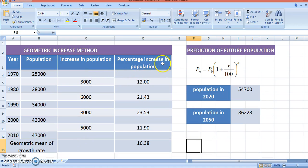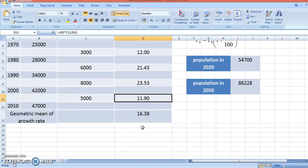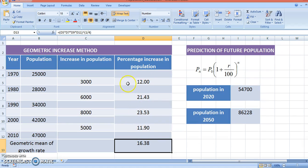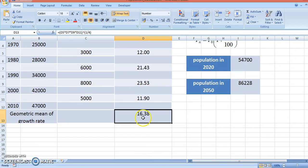Now calculate what is the percentage increase in population. How to get this? You divide the increase in population by the base population. From 25,000 to 28,000, that's 3,000 divided by 25,000, which gives 12%. Similarly, you do for all terms in the series and find out the geometric mean of this growth rate. It is multiplying each term and taking the nth root of the series. We are getting about 16.38.